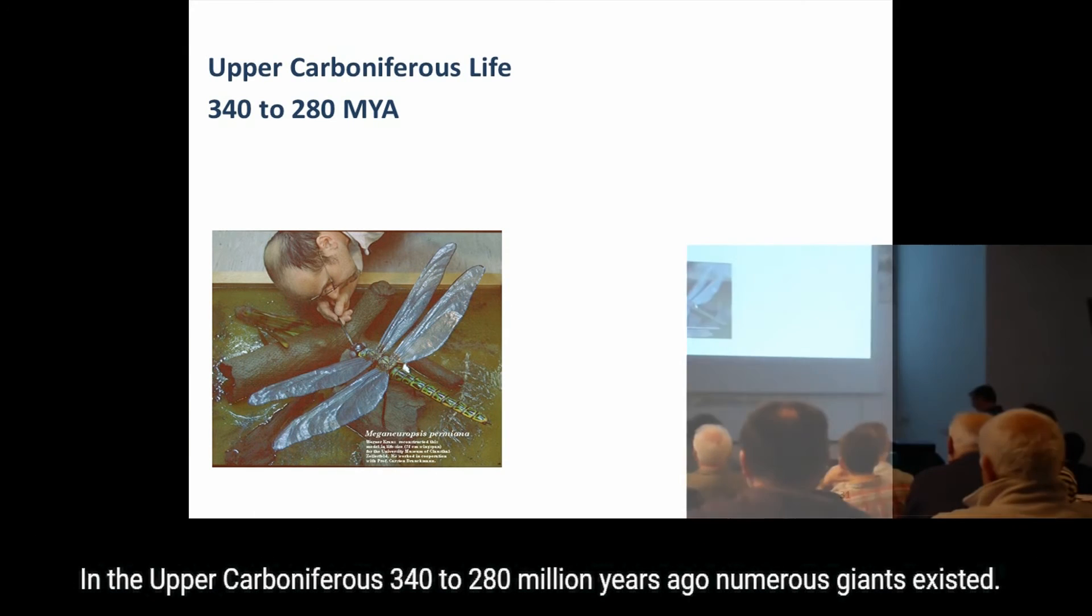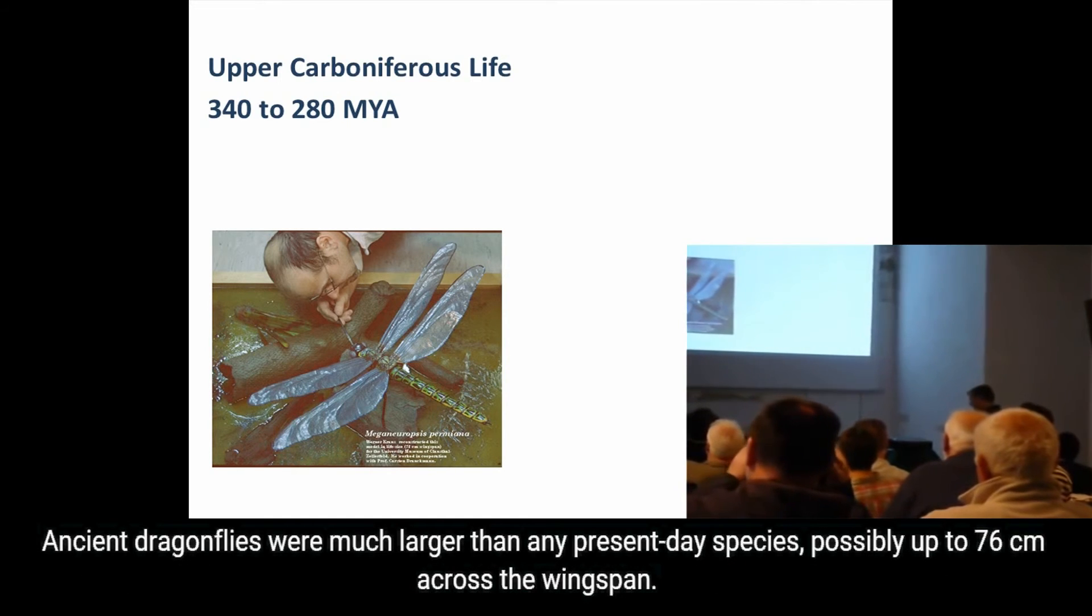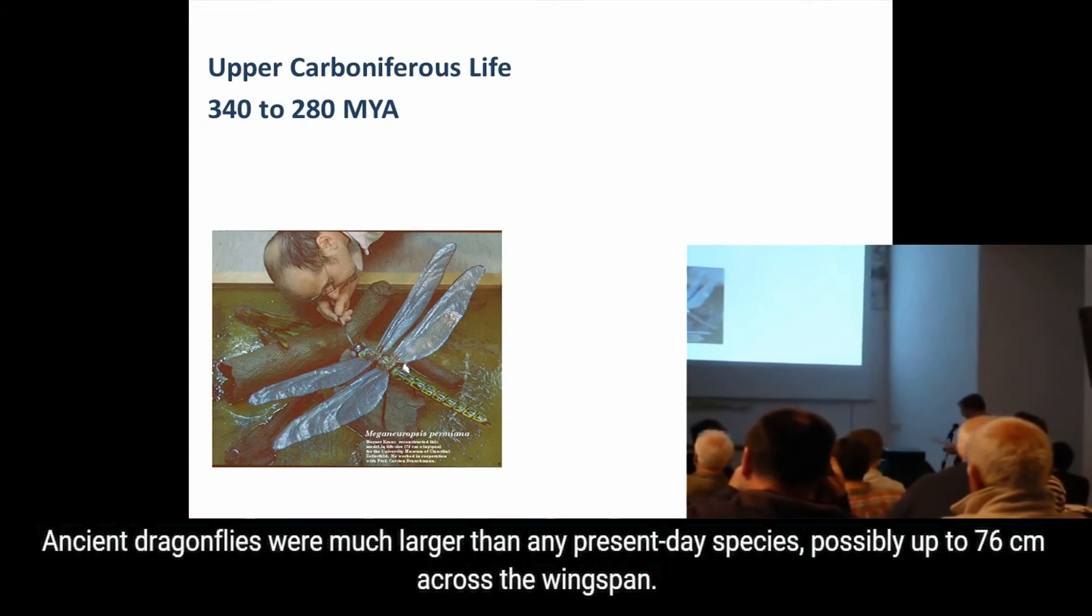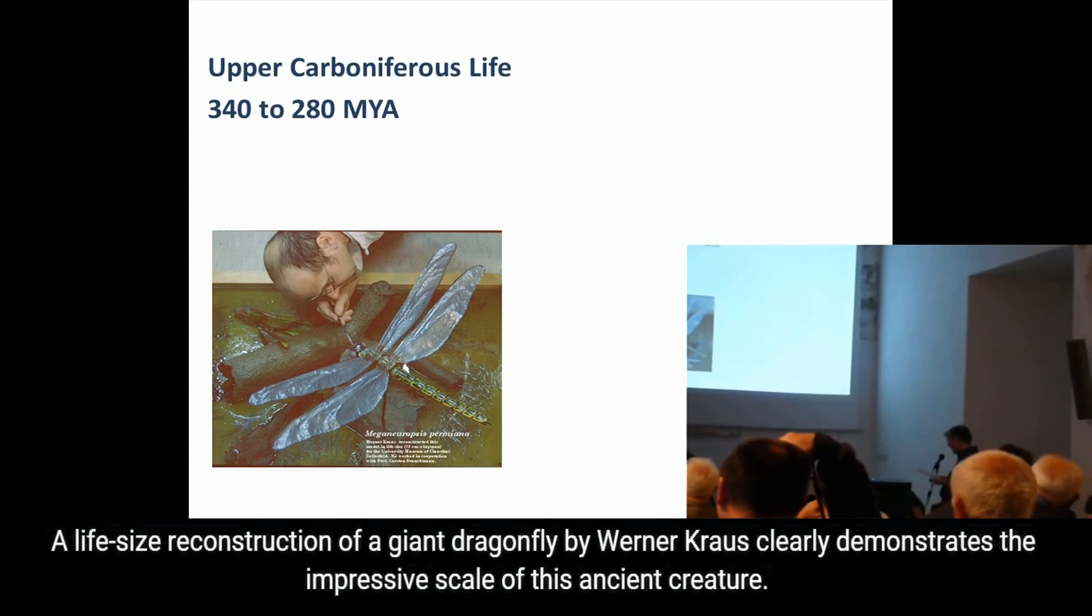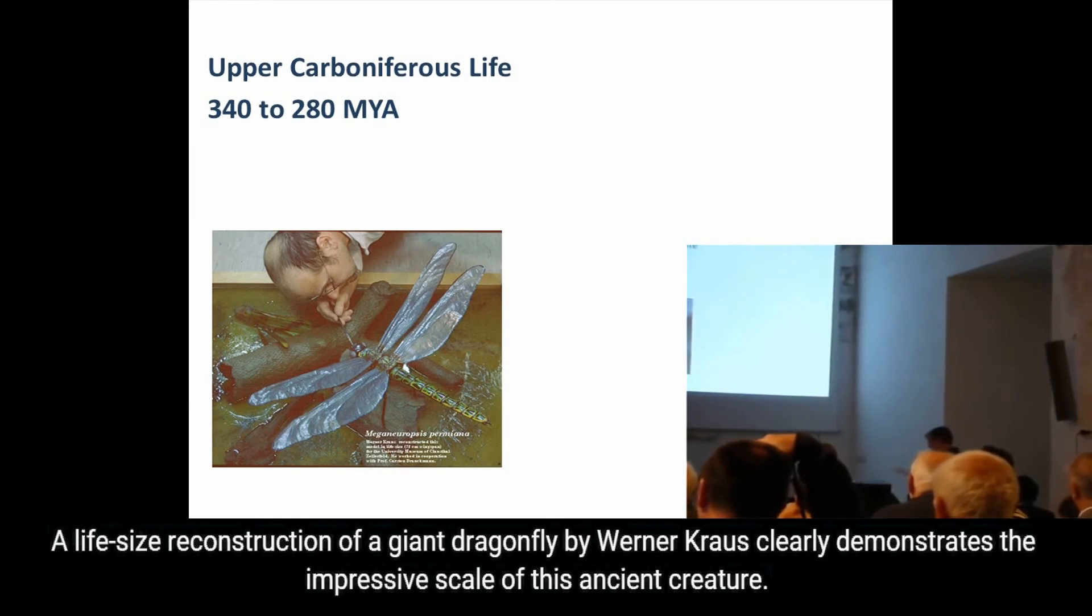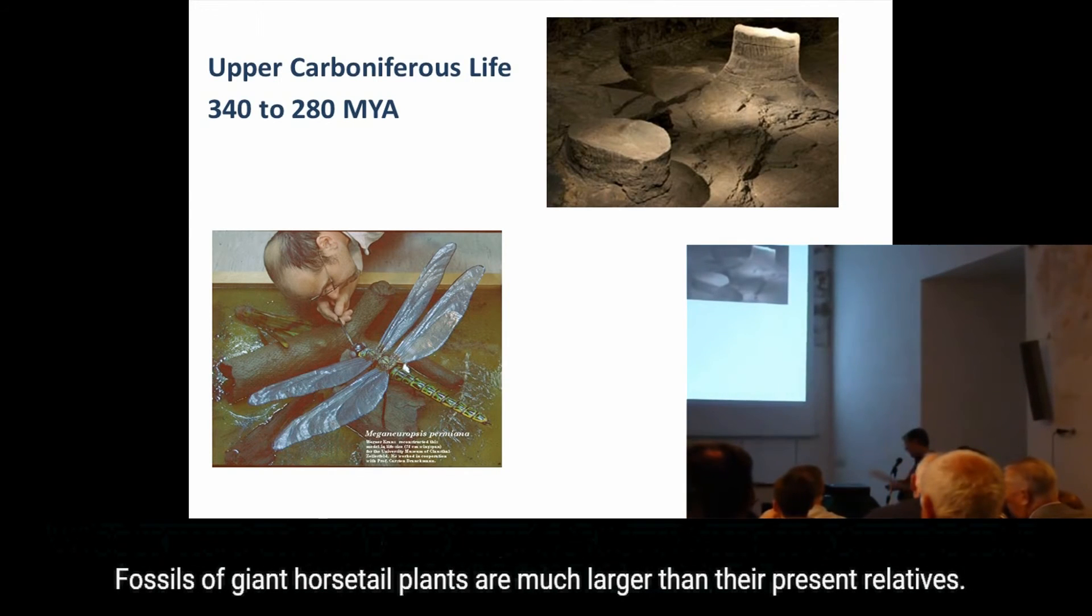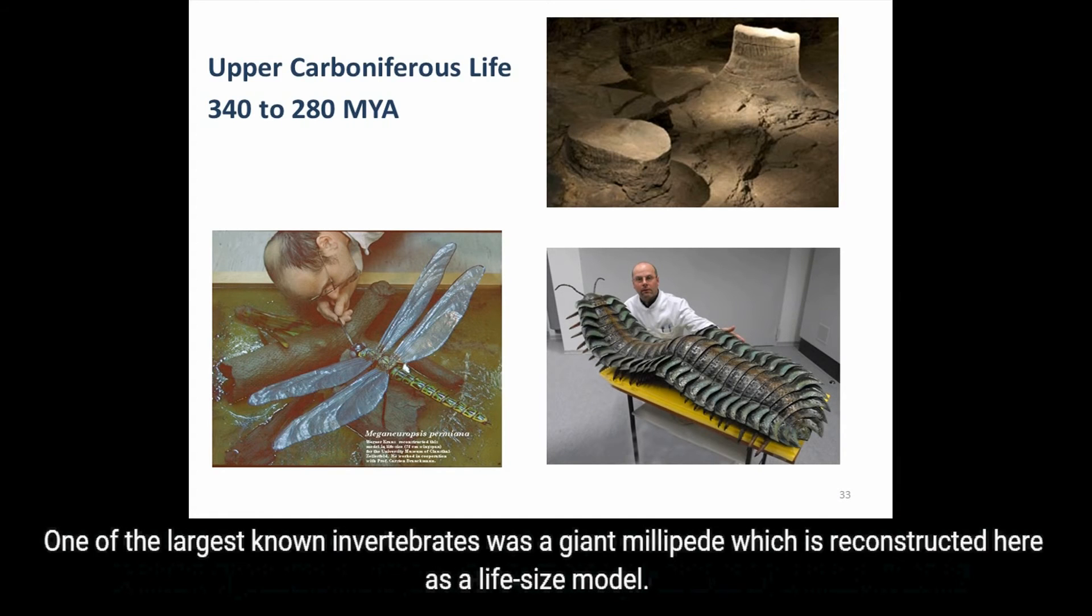In the upper Carboniferous, 340 to 280 million years ago, numerous giants existed. Ancient dragonflies were much larger than any present-day species, possibly up to 76 cm across the wingspan. A life-size reconstruction of a giant dragonfly by Werner Krauss clearly demonstrates the impressive scale of this ancient creature. Fossils of giant horsetail plants are much larger than their present relatives. One of the largest known invertebrates was a giant millipede, which is reconstructed here as a life-size model.